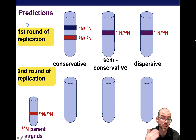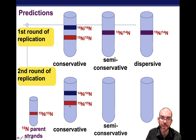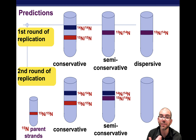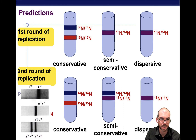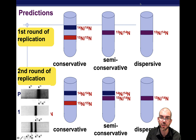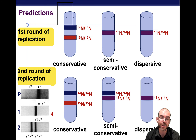With a second round of replication: conservative would still show a band of only nitrogen-15 and a band of only nitrogen-14; semi-conservative would show one 50-50 band and one band of only nitrogen-14; and dispersive would still show only a 50-50 band. Their results showed one band of 14-15 and one band of 14-14, which conclusively proved that semi-conservative replication is the method by which DNA replicates — a very elegant way to experimentally determine which of the three models is accurate.